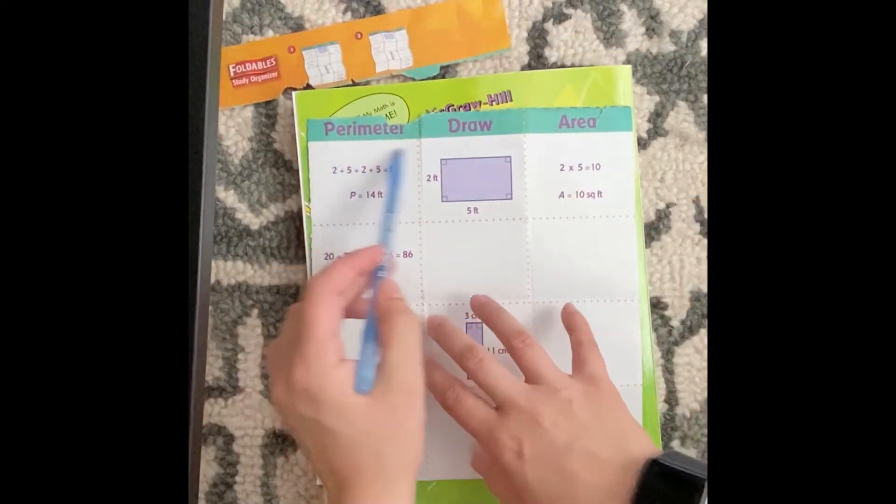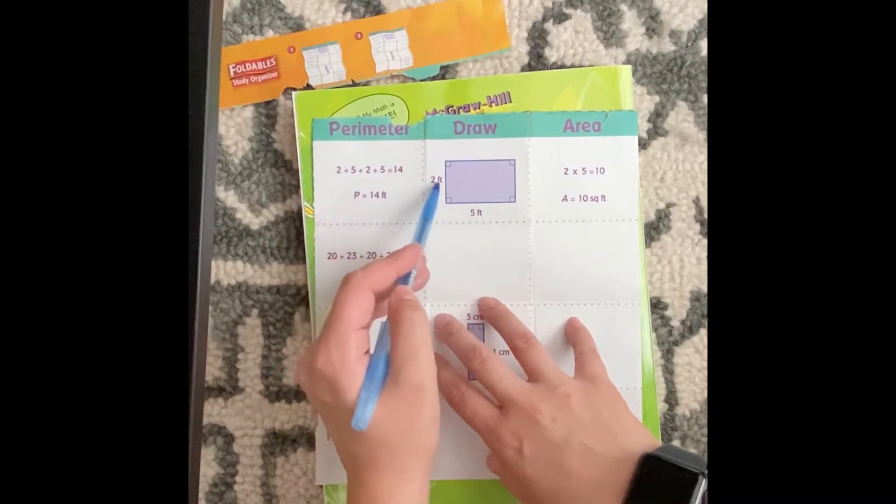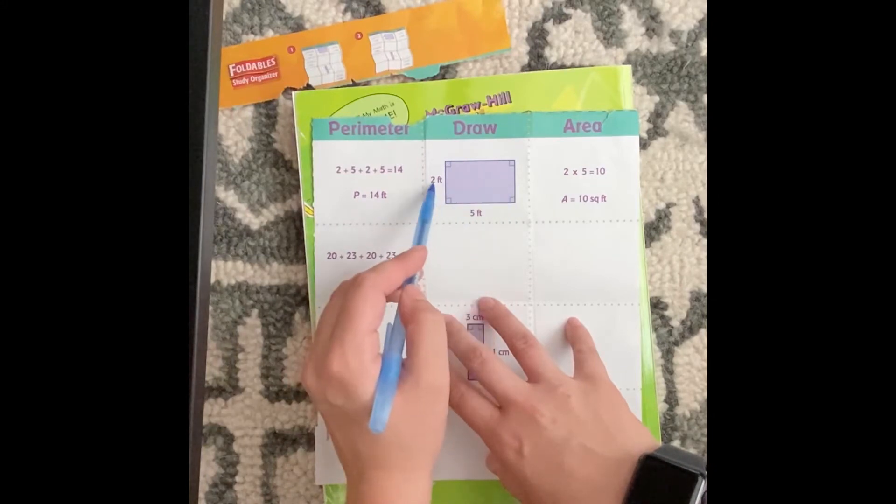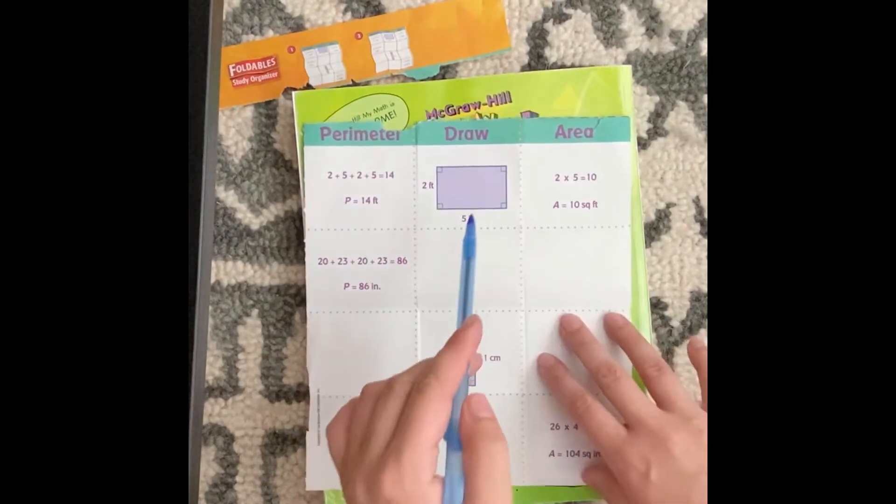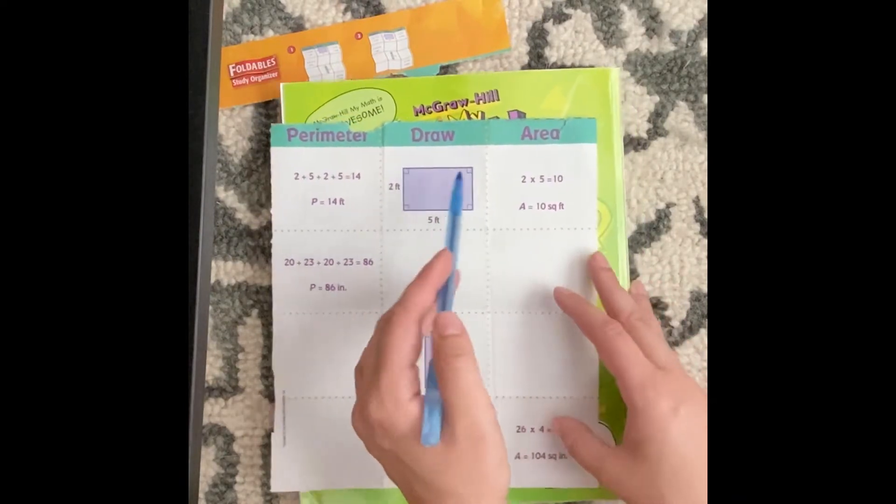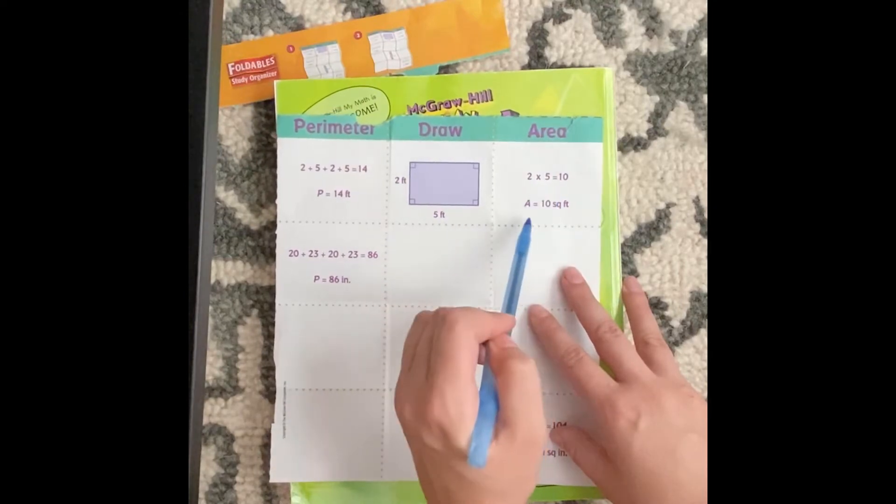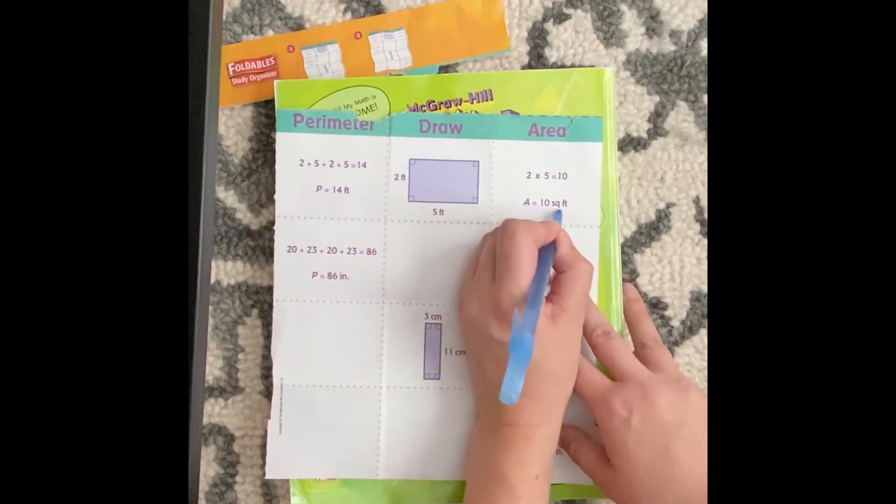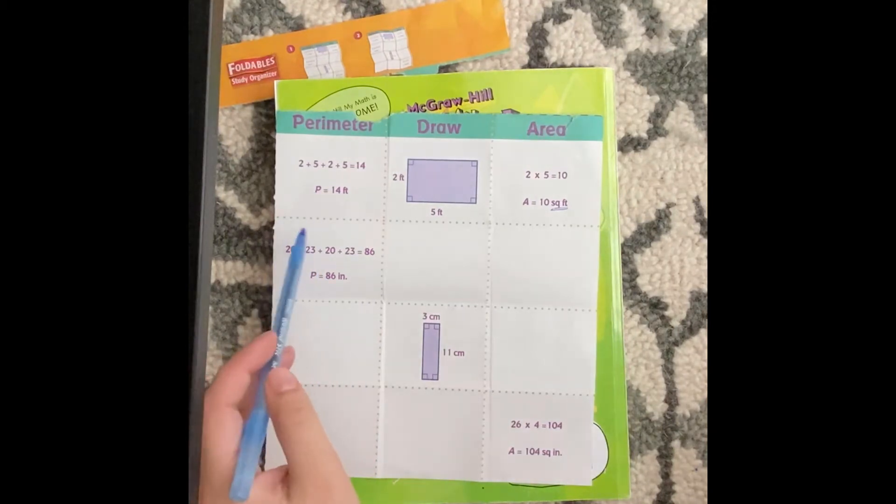We have perimeter 2 plus 5 plus 2 plus 5 equals 14. So they added the width plus length plus width plus length and got 14 feet. And when they found the area of this we did 2 feet times 5 feet is 10 square feet because area is always square.